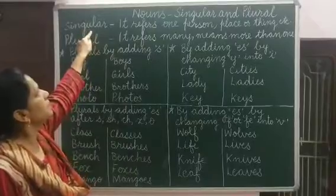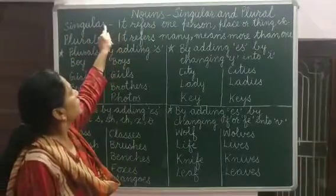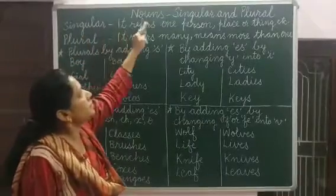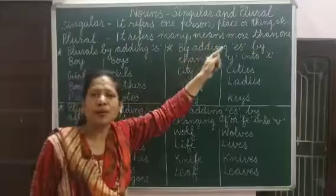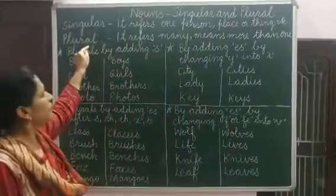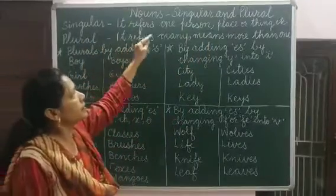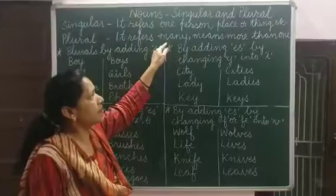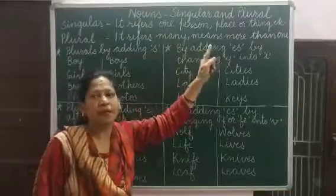Singular means it refers to one person, place, or thing. Plural nouns refer to many — many means more than one.